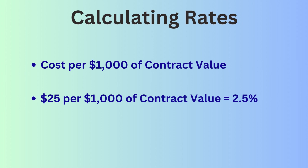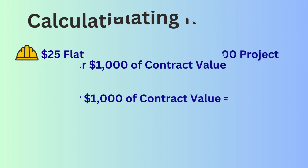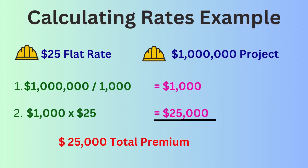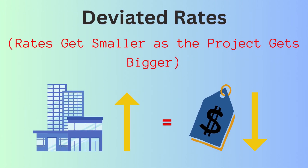Now that we have discussed what factors go into contract bond rates, let's look at how they are calculated. Surety bond rates are expressed as a cost per $1,000 of guarantee. For example, if an underwriter quotes a $25 rate, it is $25 per $1,000 of contract value — a complicated way to say 2.5%. If you have a $25 flat rate and need a performance bond on a $1 million project, you divide $1 million by $1,000, which equals 1,000. Then multiply that 1,000 times the $25 rate, giving you $25,000 as your performance bond cost.